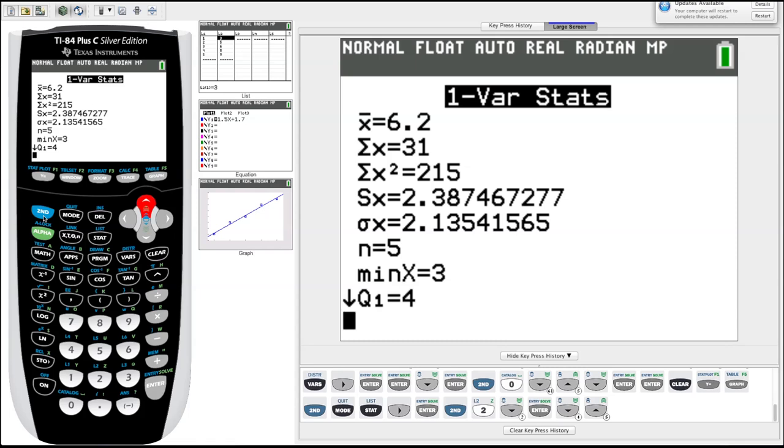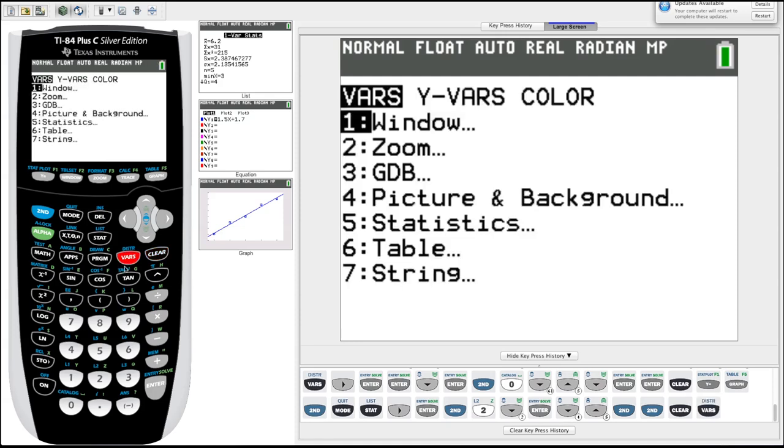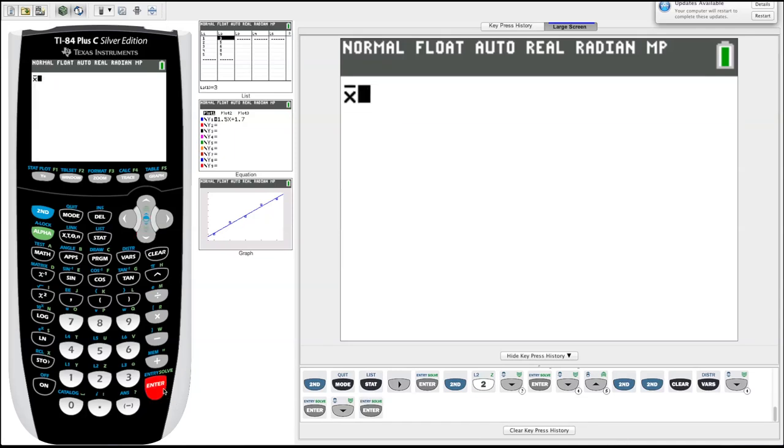And then if we clear all this stuff out, say, oh no, I forgot what the X bar was, or the average was, or I want to use that in a calculation. If I go into variables again, this vars button, and instead of going to Y vars, I'm going to scroll down to statistics, hit enter, and it's going to prompt me with a lot of the things I just had calculated. Let's scroll down to 2, X bar, which was 6.2, our average. If we were just to hit enter, there it is, it's stored, it has stored X bar as 6.2.